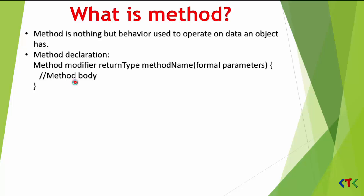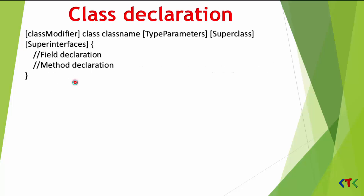This is how we declare a class. A class declaration has an optional class modifier, the class keyword, followed by the class name, and optionally a superclass and superinterfaces. The class body begins with an opening curly brace, which contains field declarations and method declarations, and is closed with a closing curly brace.